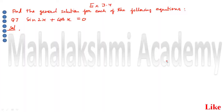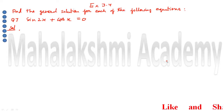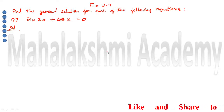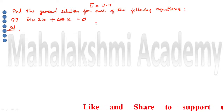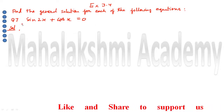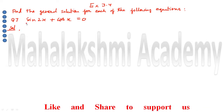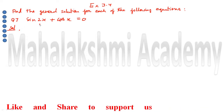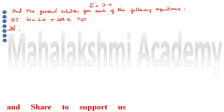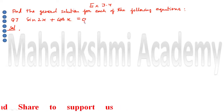Hello everyone. I am going to explain question number 7 from exercise 3.4 from 11th class maths. Question number 7 is: find the general solution for each of the following equations. The given trigonometric equation is sin 2x plus cos x is equal to 0.